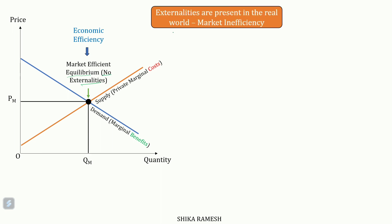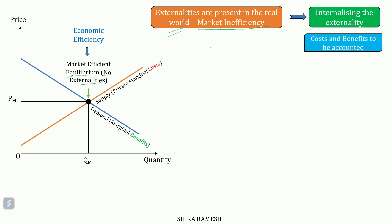But in the real world, externalities are present, which is why markets are never economically efficient — rather they are inefficient. But an inefficient market can be made efficient by internalizing the externality, which means the benefits arising from positive externalities as well as the costs arising from negative externalities need to be accounted for. That is what is meant by internalizing the externality.